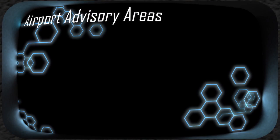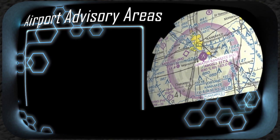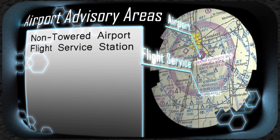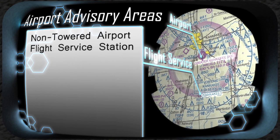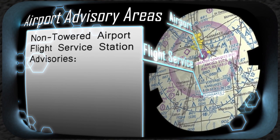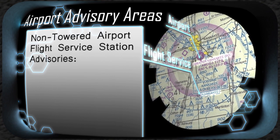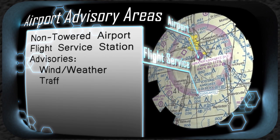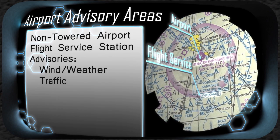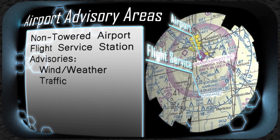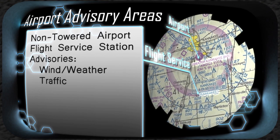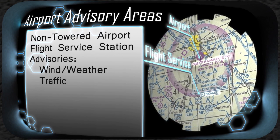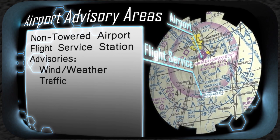Airport advisory areas are areas surrounding a non-towered airport on which a flight service station is located. The flight service station can provide advisories over the CTAF frequency pertaining to wind and weather information and even basic traffic advisories. Remember that the FSS is only advising about traffic, and it's up to the PIC to maintain safe and adequate traffic separation from other aircraft.